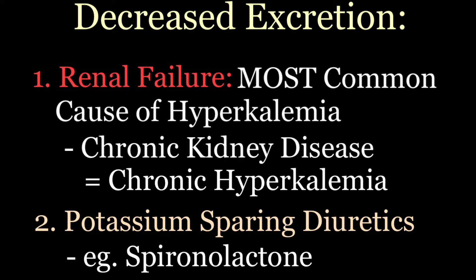Other causes of decreased potassium excretion include potassium-sparing diuretics. This might seem counterintuitive because we know diuretics can cause low potassium levels, but the key word here is potassium-sparing — these diuretics hold on to potassium while allowing fluid excretion. The most common potassium-sparing diuretic is spironolactone.